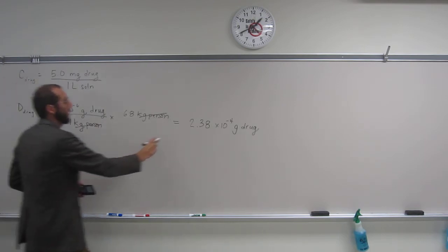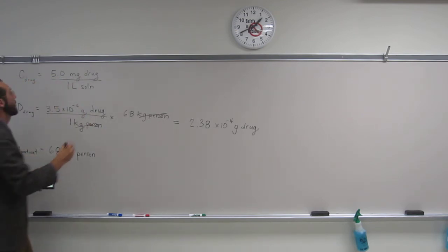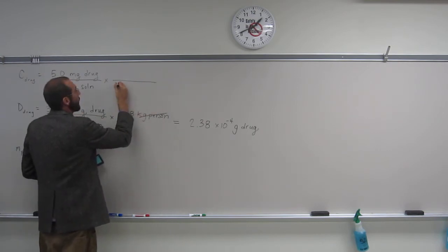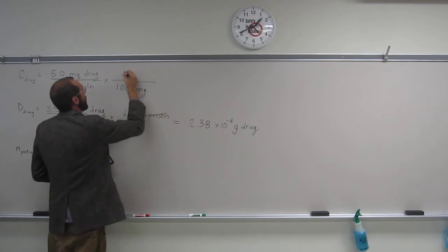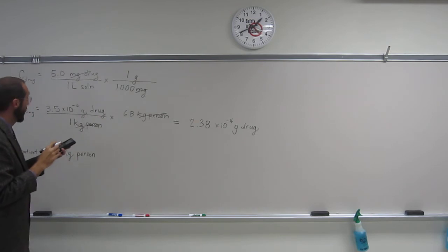So we're looking for this many grams. So we're going to have to, of course, convert milligrams to grams. So how do we do that? We take the conversion factor that you should know. So 1,000 milligrams is 1 gram. Cancel like that.